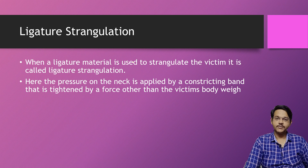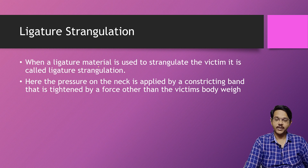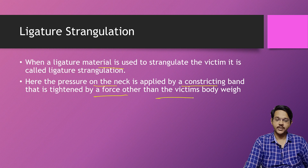In this video we will discuss about ligature strangulation. Ligature strangulation is a form of strangulation where ligature material is used to strangulate the victim. The pressure on the neck is applied by a constriction band that is tightened by force other than the victim's body weight.